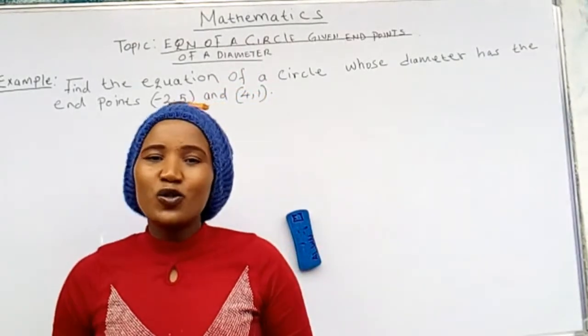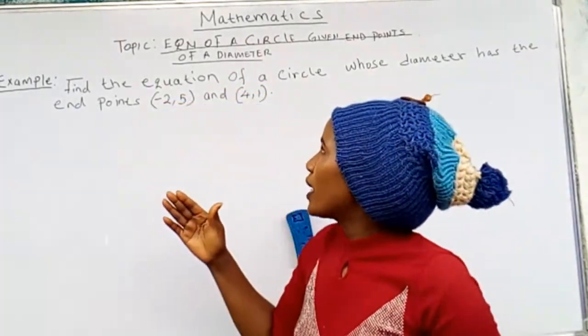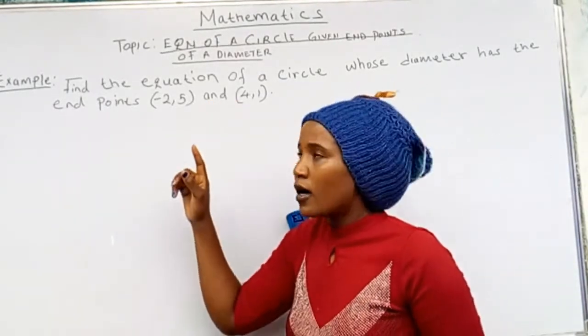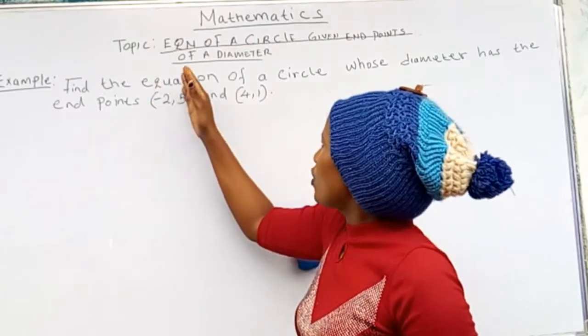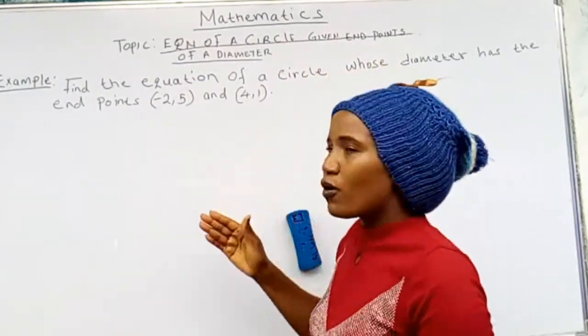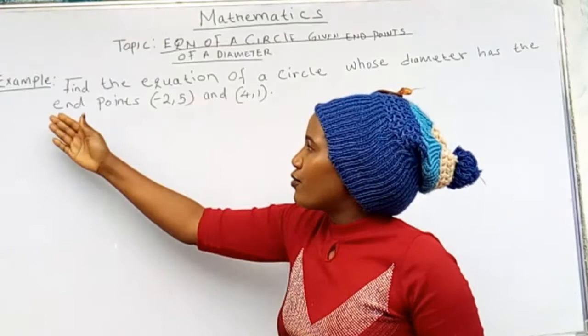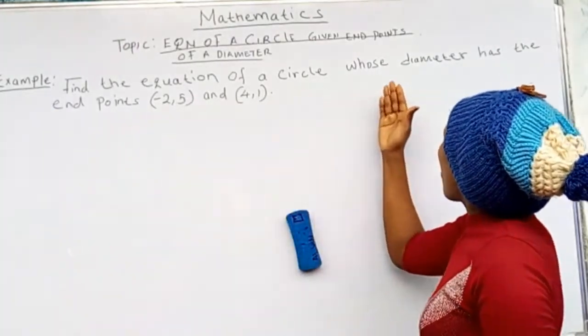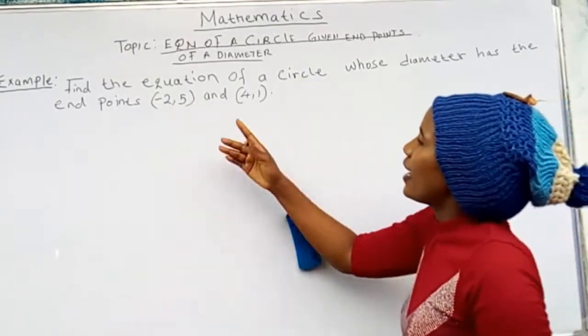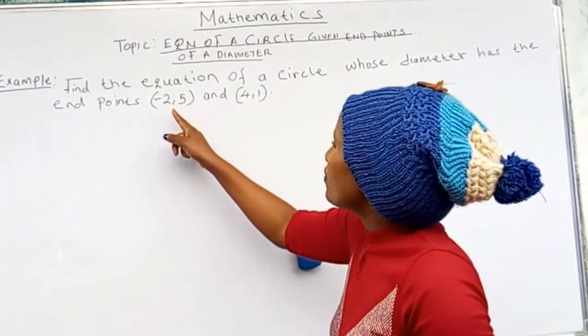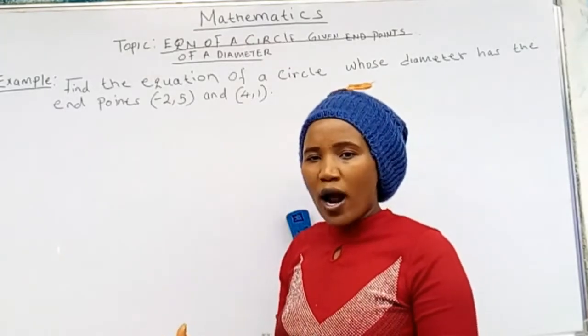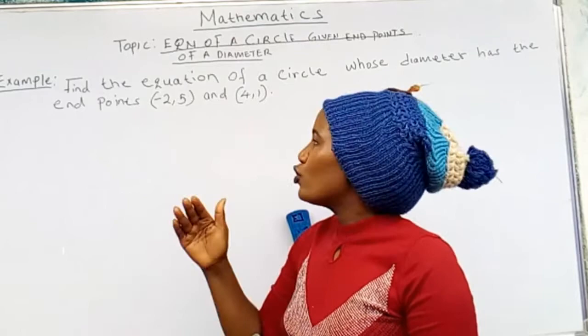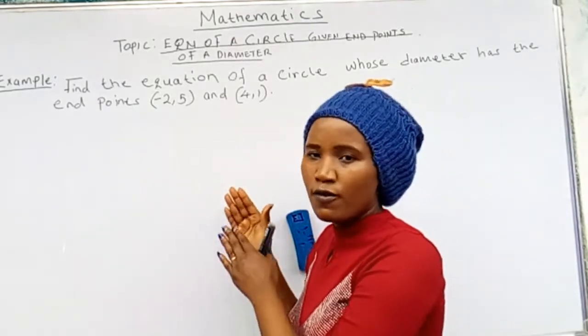So today I have an amazing tutorial. We are going to look at a topic in mathematics. This is in Form 3: equation of a circle given the endpoints of a diameter. I have an example here. We are told to find the equation of a circle whose diameter has the endpoints (-2, 5) and (4, 1). So I'm going to show you step by step how to tackle a question of this form.